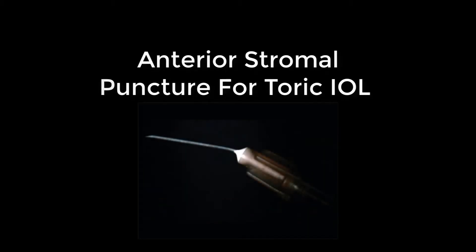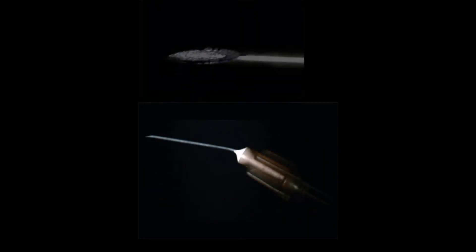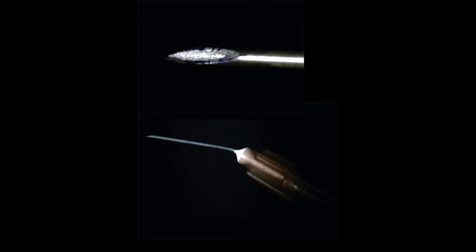Anterior stromal puncture for toric IOL. Errors can occur while marking, associated with smudging or fading away of dye during preoperative reference axis marking. Anterior stromal puncture creates a point mark without any epithelial erosion, and the simultaneous staining helps in perfect and long-time retention of the dye.